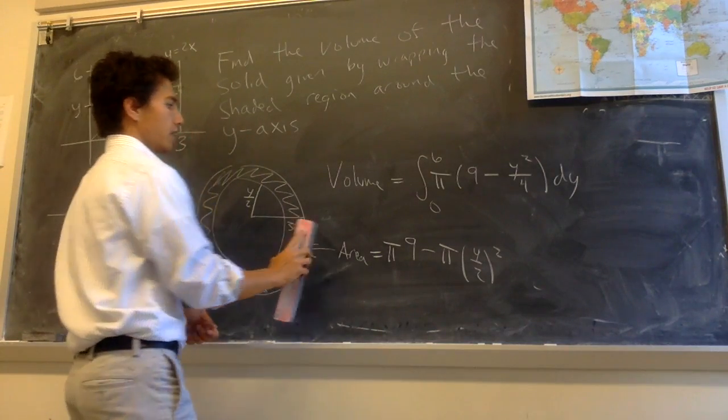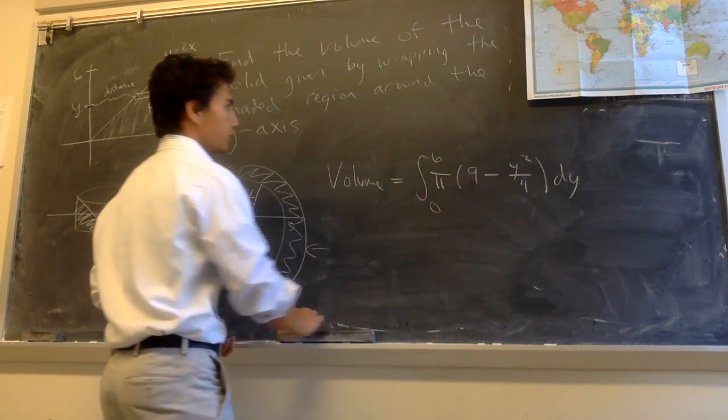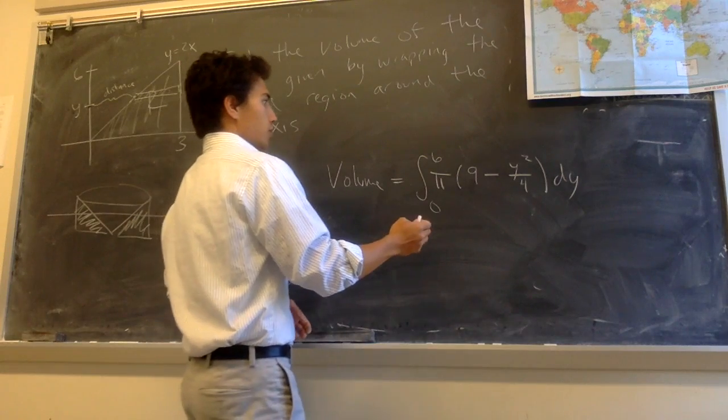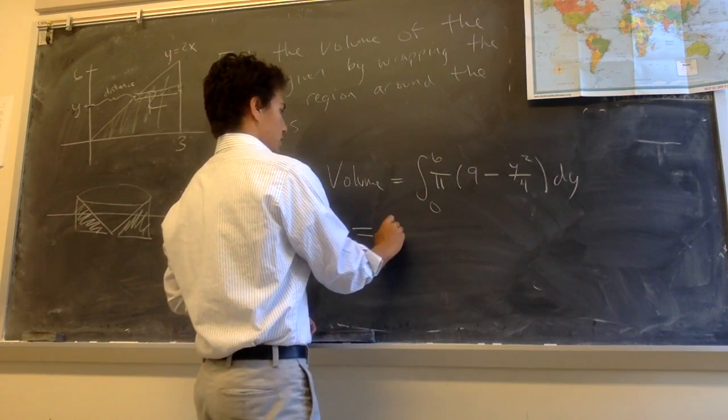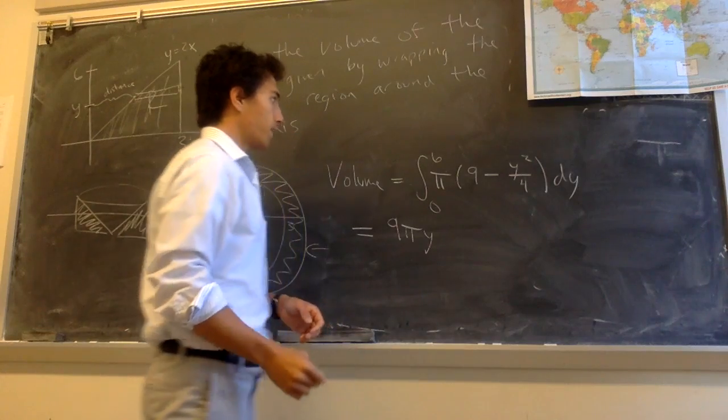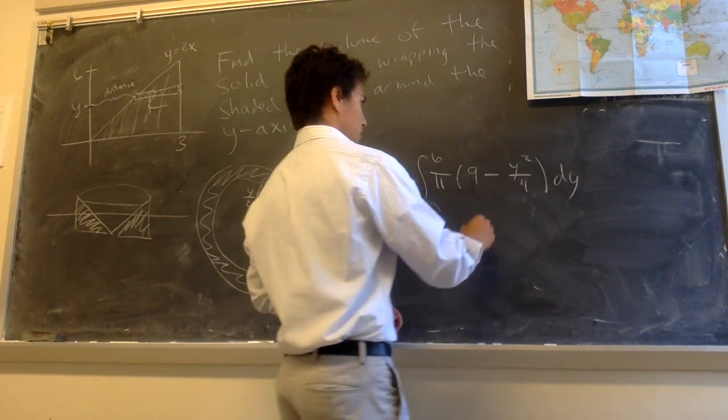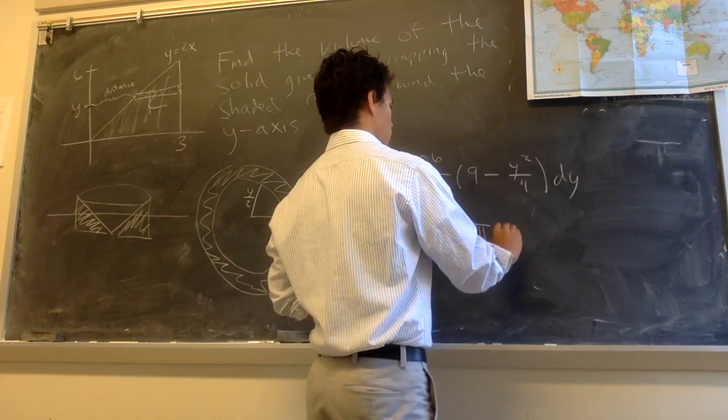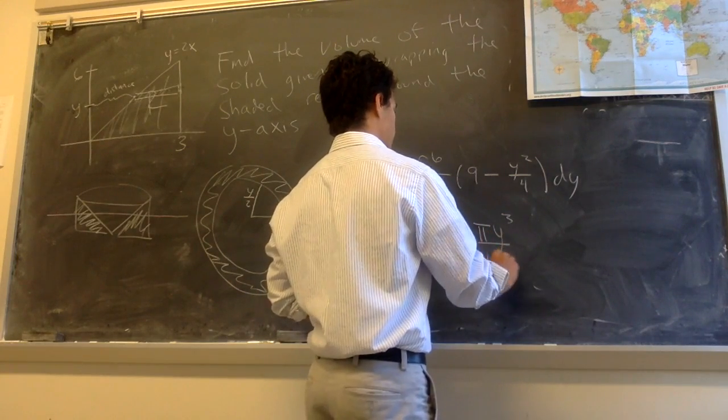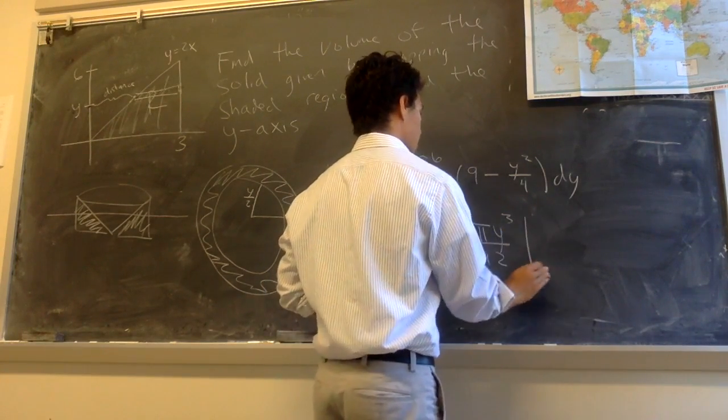And now this is an integral that we know how to compute. So the anti-derivative here is 9 pi y minus pi y cubed over 12. And we're evaluating from 0 to 6.